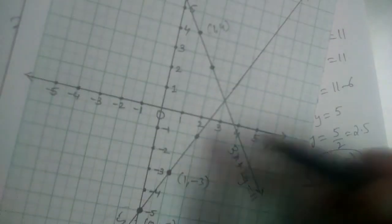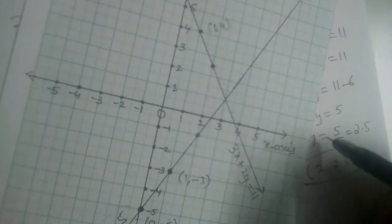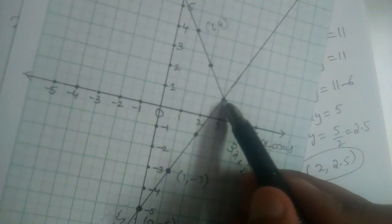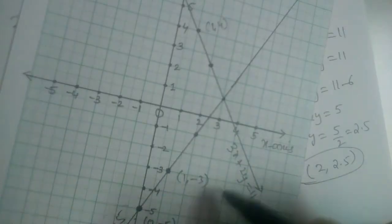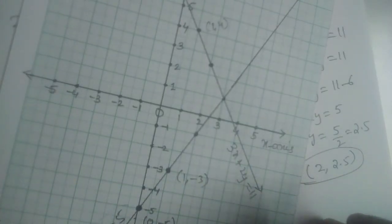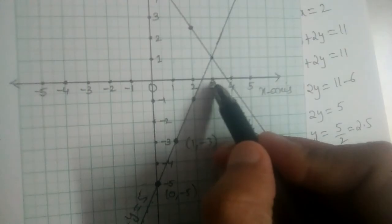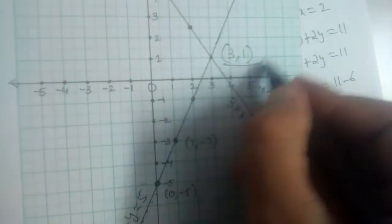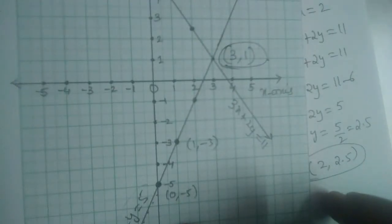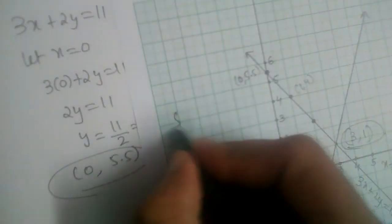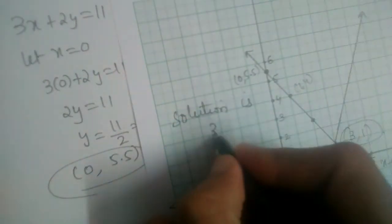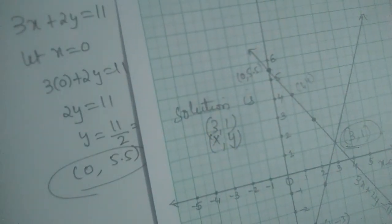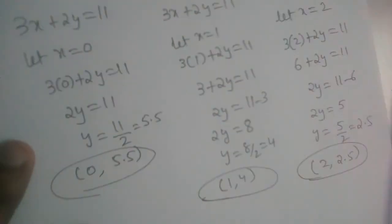The common solution of these two equations is the point lying on both straight lines — the point of intersection. Looking at the graph, the value of x at the intersection is 3 and the value of y is 1. So 3 comma 1 is our solution: x is equal to 3 and y is equal to 1.